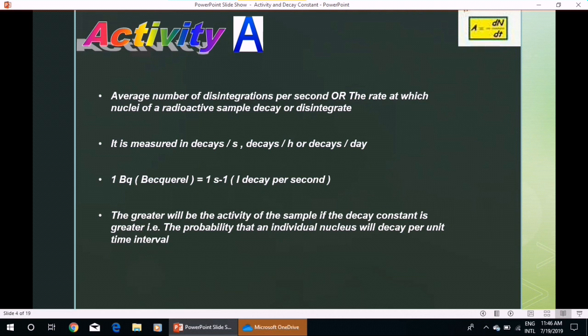Activity: average number of disintegrations per second, or the rate at which nuclei of a radioactive sample decay or disintegrate, is called activity of that sample. It is measured in decays per second, decays per hour, or decays per day.